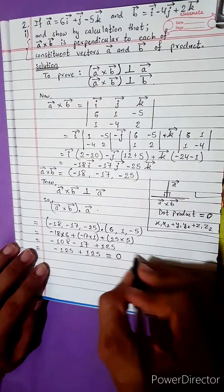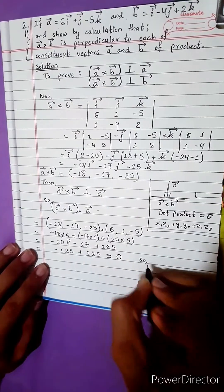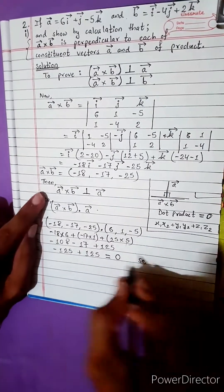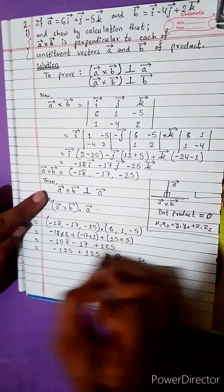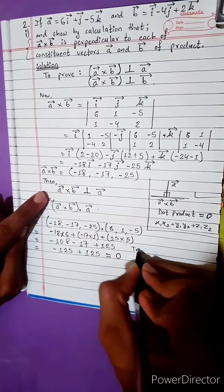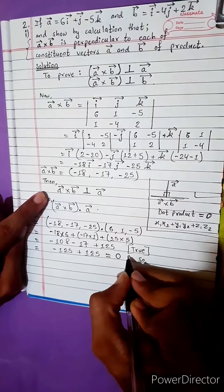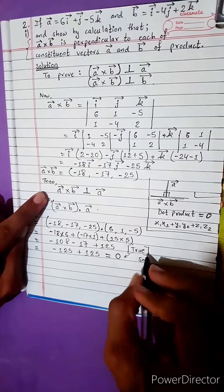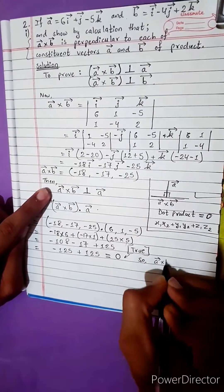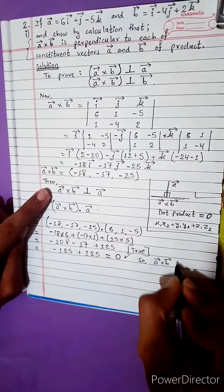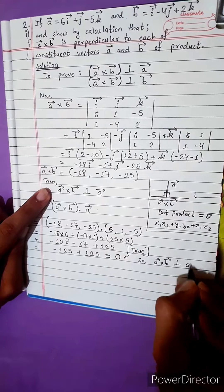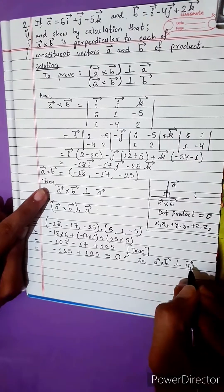So, whenever dot product equals 0, the condition is true. Here the result equals 0, and this is true. So, a vector cross product b vector is perpendicular to a vector.